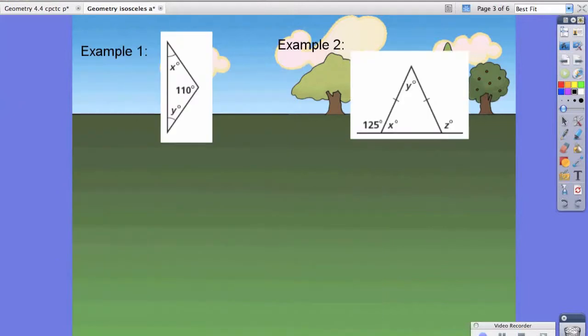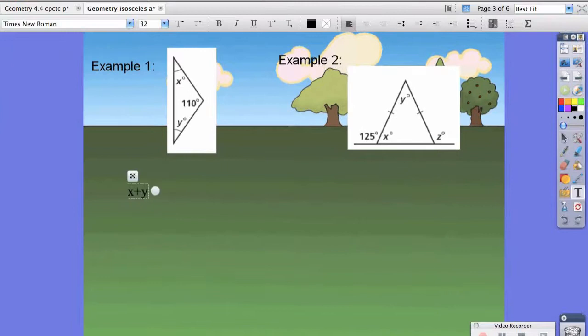So let's look at a couple examples. In example 1, it mentions that angle X and angle Y are congruent because it has these little marks. That means if a triangle has 180 degrees, that means X plus Y plus 110 equals 180 degrees.